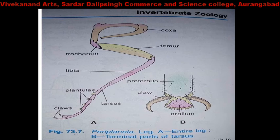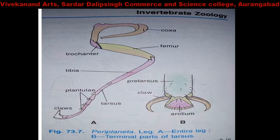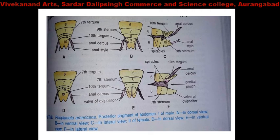At the last terminal region is the claw. The figure shows the entire structure of the leg. In the magnified figure, the pretarsus is shown, below which is the arolium. On top are small bristles, and the claw is a curved or semi-curved sharp structure. This is the entire structure of the walking leg of the cockroach, which makes it a fast runner with cursorial habits.